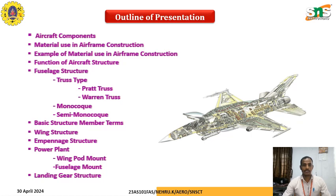We are going to see the types of fuselage structures like truss-type monocoque, semi-monocoque, the basic structural members, wing structure, empennage structure, power plant — including wing-mounted, fuselage-mounted — and landing gear structure.